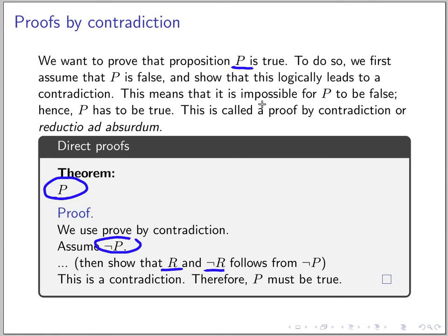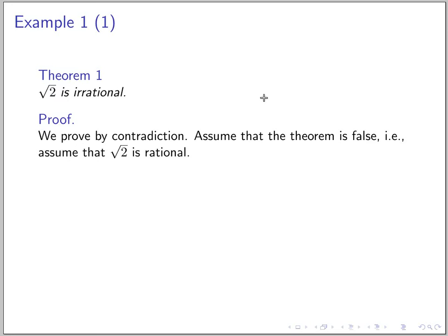So let's look at an example for that. Alright so we will talk about this proof. It is the proof that shows that square root 2 is irrational.